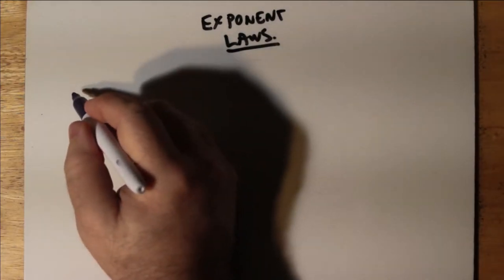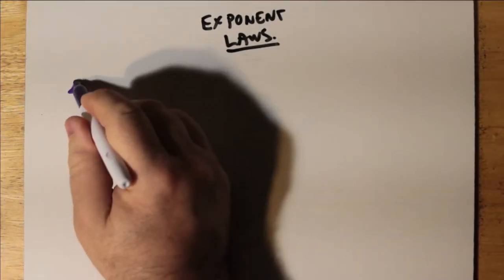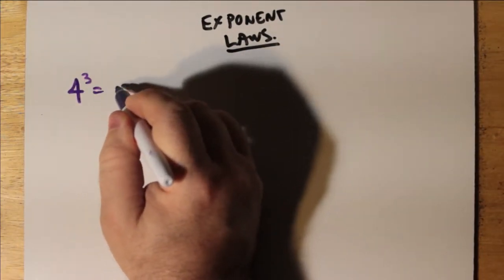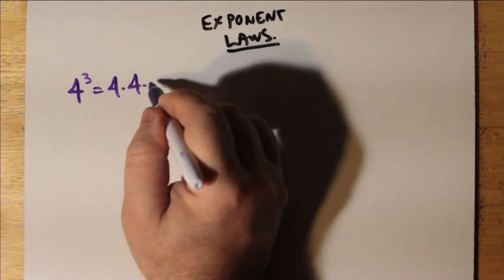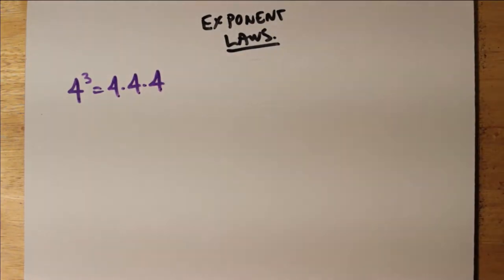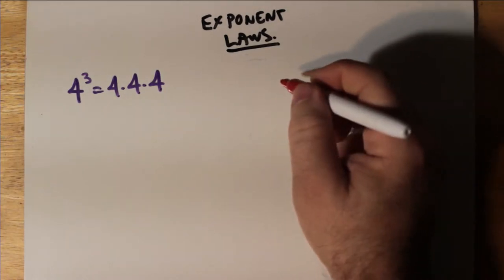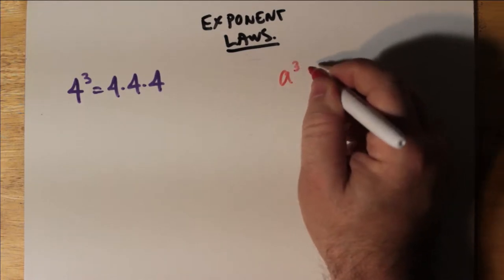Welcome to my video on exponent laws. We begin with any number, any base, raised to an exponent is just multiplied by itself by the number of times suggested by the exponent, such as 4 cubed is just 4 times 4 times 4, or 4 multiplied by itself 3 times.